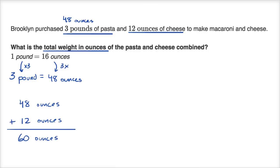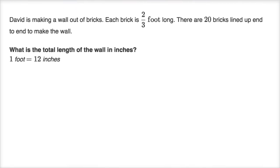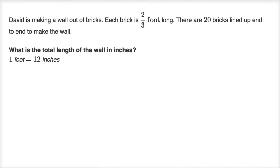Let's do another example with other units. David is making a wall out of bricks. Each brick is two thirds of a foot long. There are 20 bricks lined up end to end to make the wall. What is the total length of the wall in inches? We have to pay attention to the units.